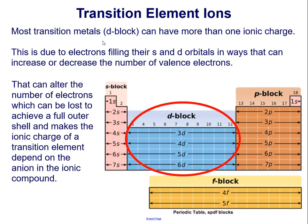Transition element ions: most transition metals in the D block can have more than one ionic charge. This is due to electrons filling their S and D orbitals in ways that can increase or decrease the number of valence electrons. This can alter the number of electrons which can be lost to achieve a full outer shell, and makes the ionic charge of a transition element depend on the anion in the ionic compound.